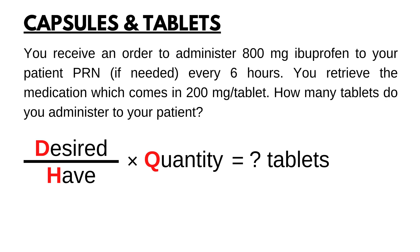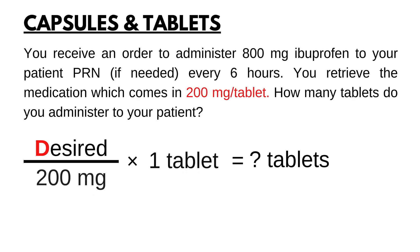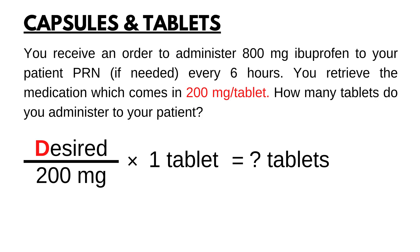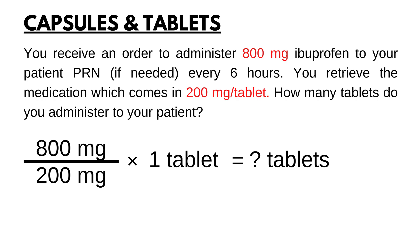Once you have everything organized, you start plugging in the numbers. First, start with have and quantity, because they are usually given to you and they come together. For this problem, it's 200 mg per tablet. For desired, you plug in the doctor's order: 800 mg. Do not get distracted with the every 6 hours — it is additional information that's not necessary for answering this question. Since both units on top and bottom are the same, milligrams, we can start calculating: 800 mg divided by 200 mg times one tablet. Milligrams canceled out, and the answer is 4 tablets.